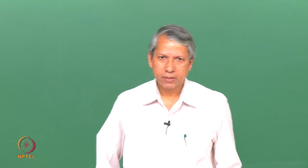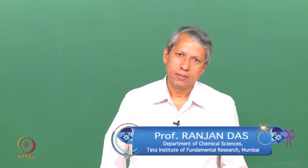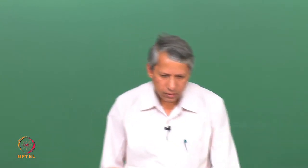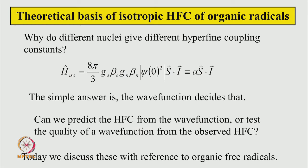In this series of lectures, we have seen many EPR spectra, analyzed some of them, and measured the isotropic hyperfine coupling constant for some of the spectra. We found the values are different for different nuclei. So today we are going to ask: why do different nuclei give different hyperfine coupling constants?